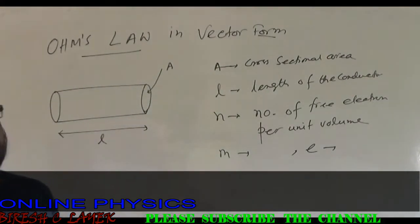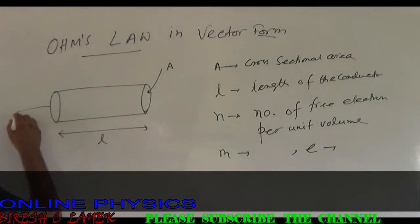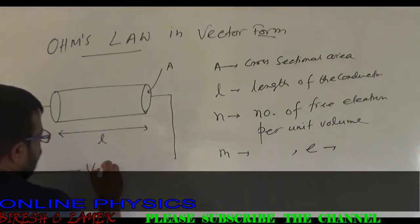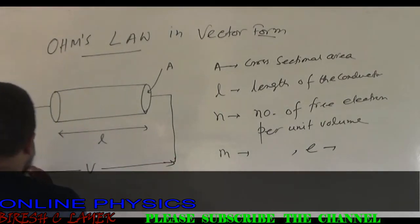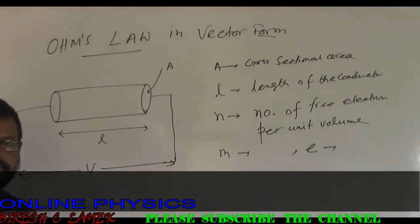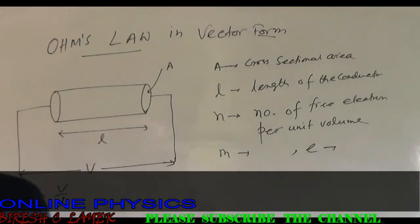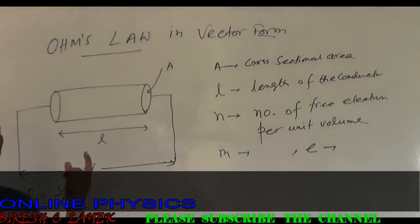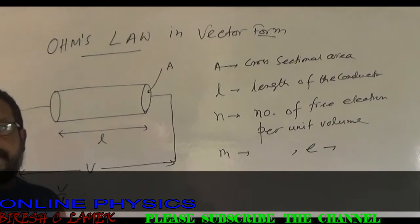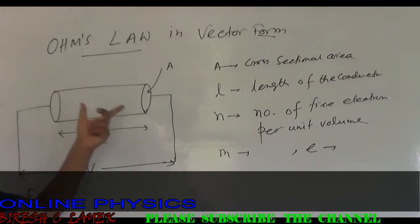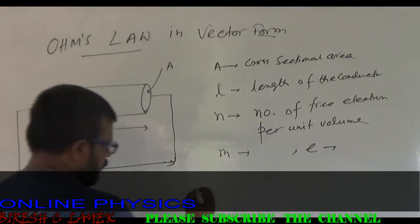Now if we apply a potential difference across this conductor, let V be the potential difference. Then there remains an electric field of intensity E equals V by L throughout the conductor. Due to this electric field, the free electrons inside the conductor will drift, and let v_d be the drift velocity.